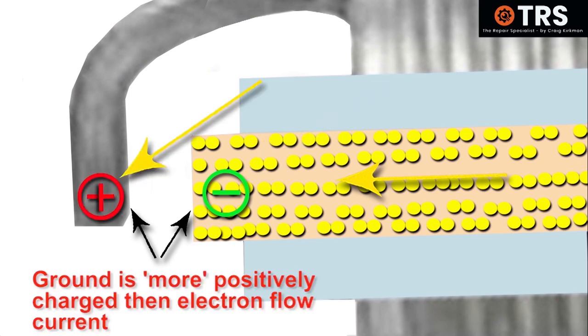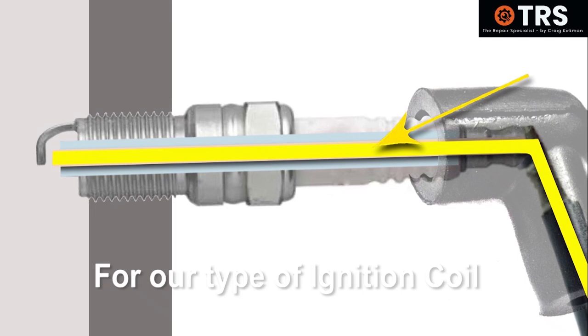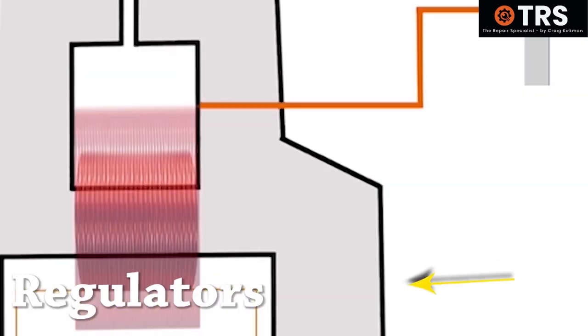Because this current isn't flowing through the spark plug the way it should, the smart regulating system inside the coil pack recognizes this.